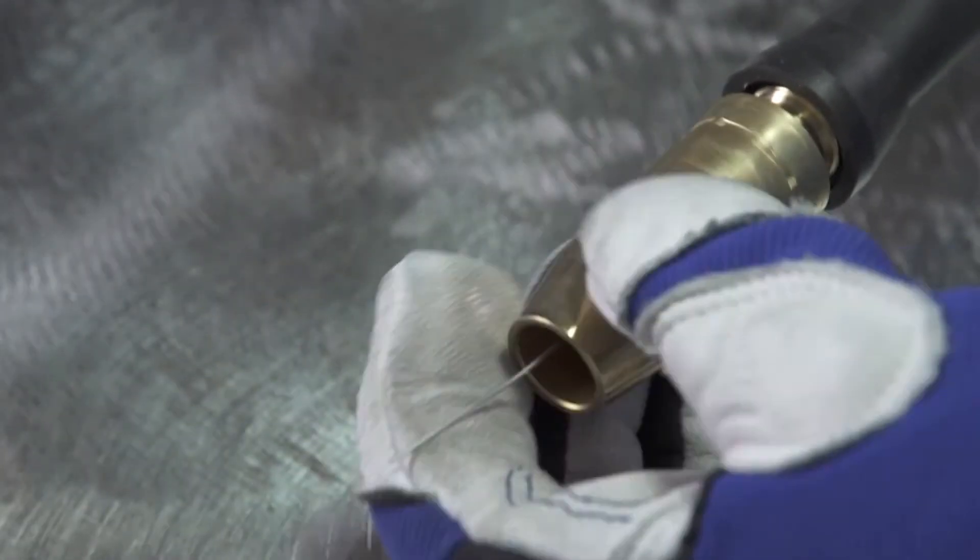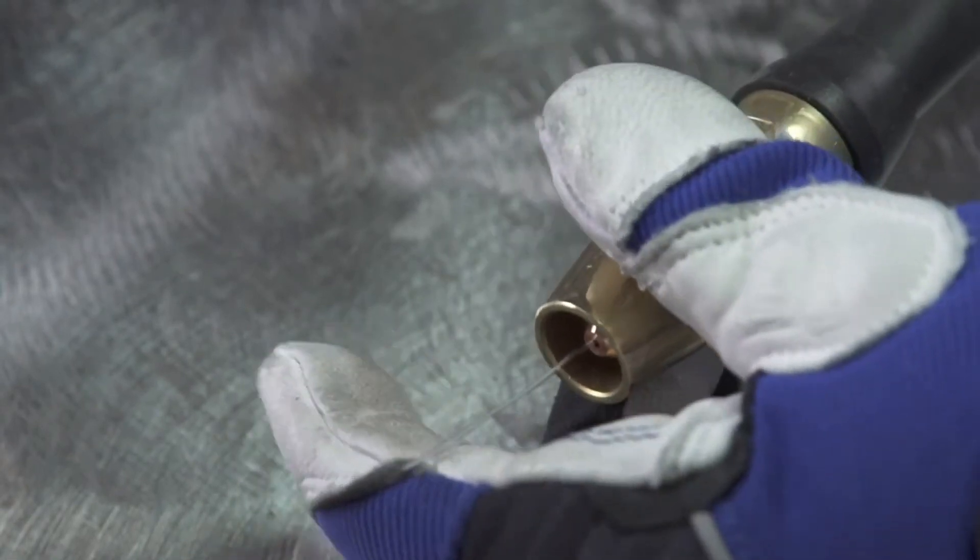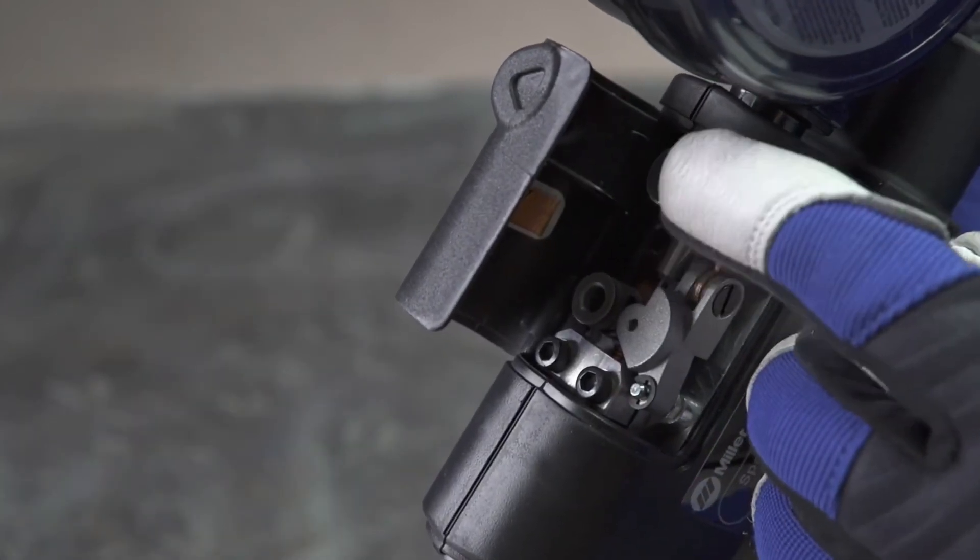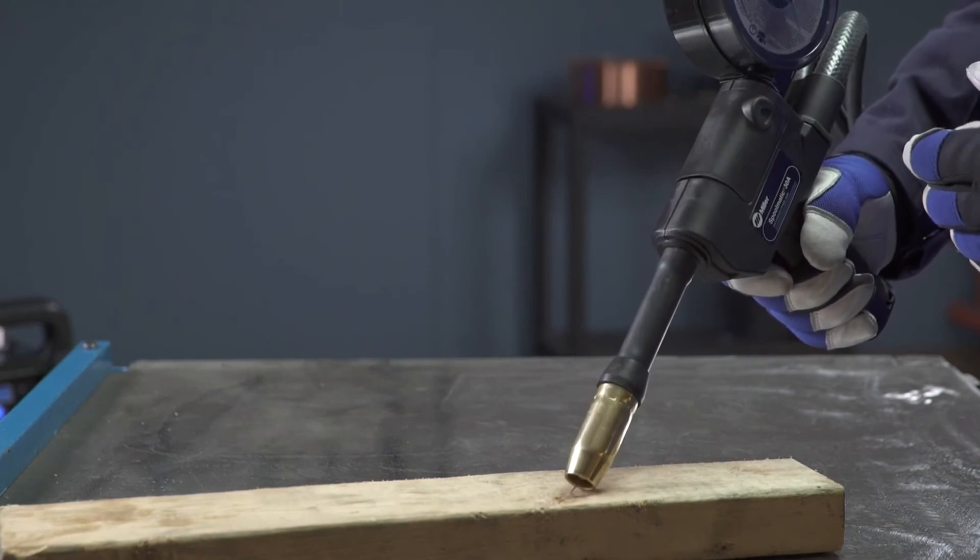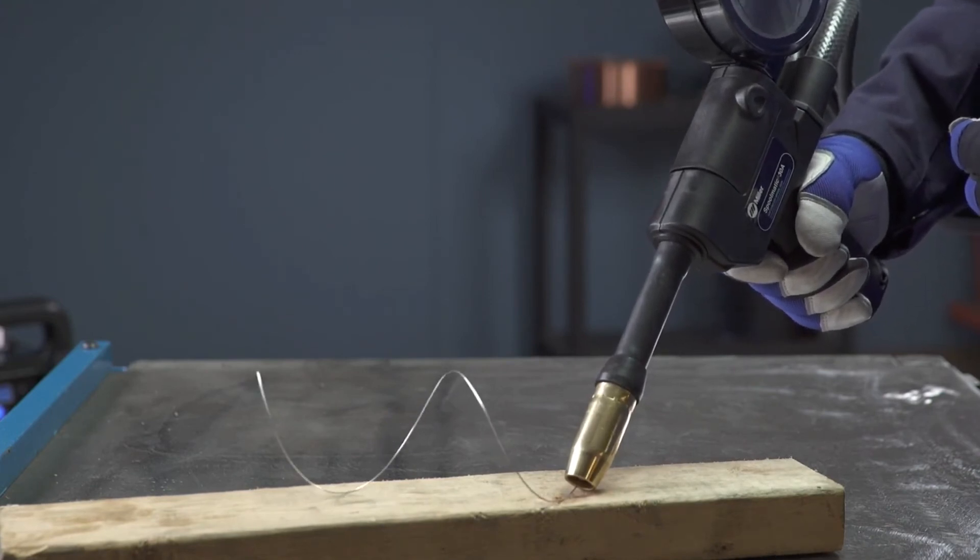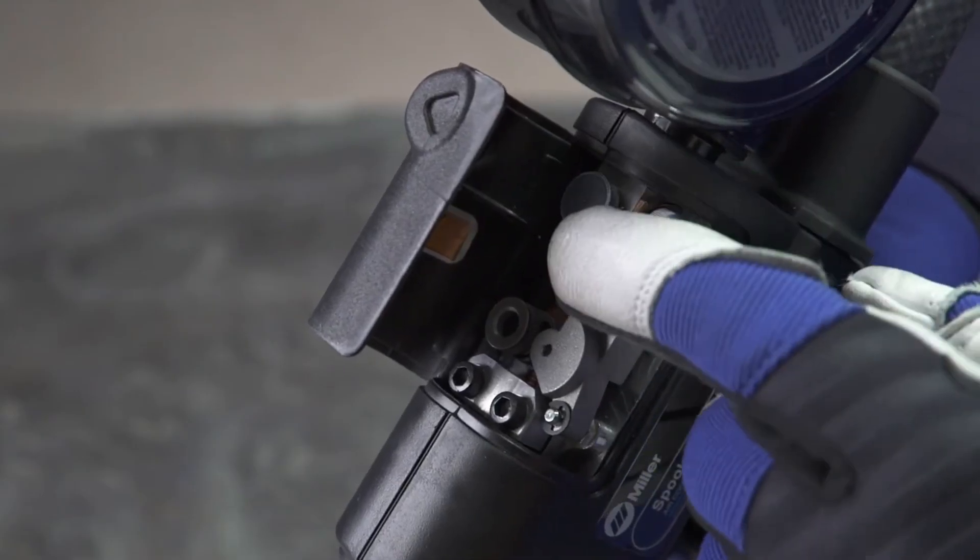When correctly set up, the tip will be recessed an eighth inch. You will want to set the drive roll tension on your spool gun to low to minimize any distortion of the wire. Place your gun tip over an insulated surface, like this wood block, and feed the wire until it feeds consistently and curls on the wood without slipping. Adjust the tension as needed.